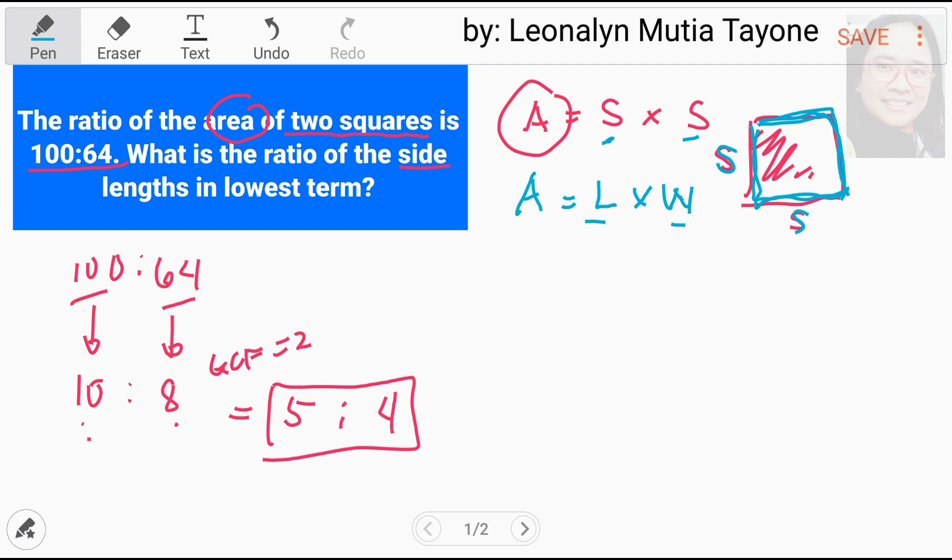Kaya, itong 100 na ito, na ito yung area ng isang square at yung pangalawa, 64, is square root lang natin yan. So, square root of 100 is 10, square root of 64 is 8. Hinanapan natin ang greatest common factor, which is 2, para ma-list natin. So, ang greatest common factor 2, 10 divided by 2 equals 5, 8 divided by 2 equals 4.